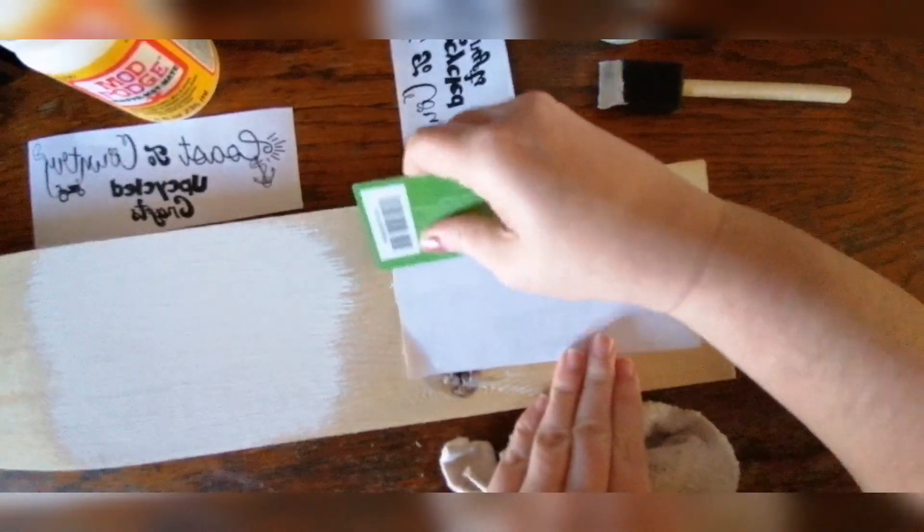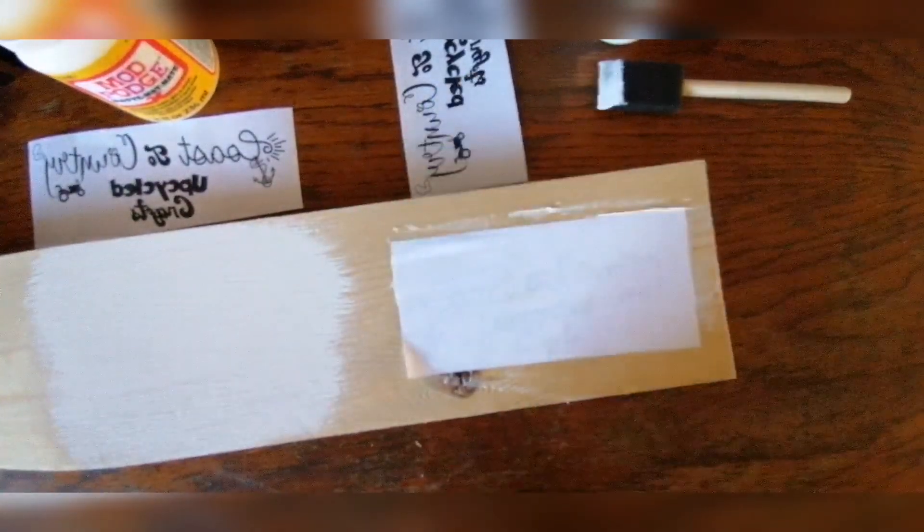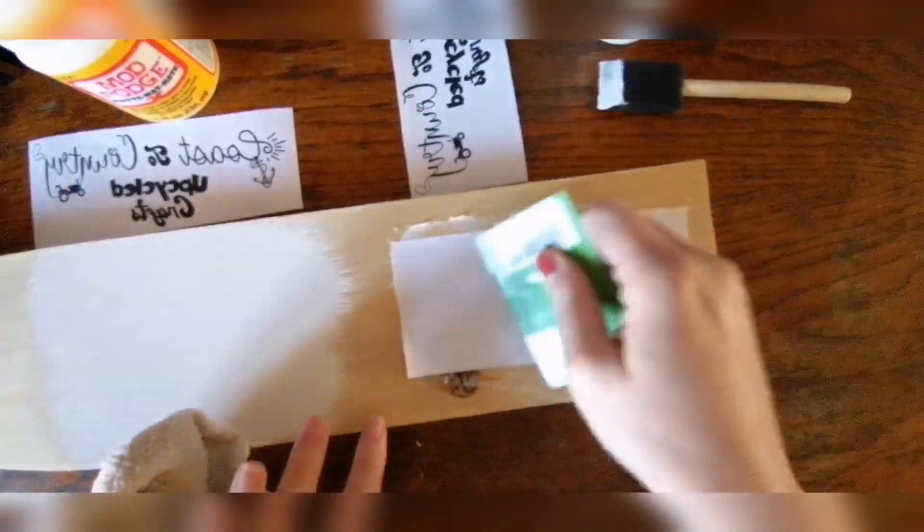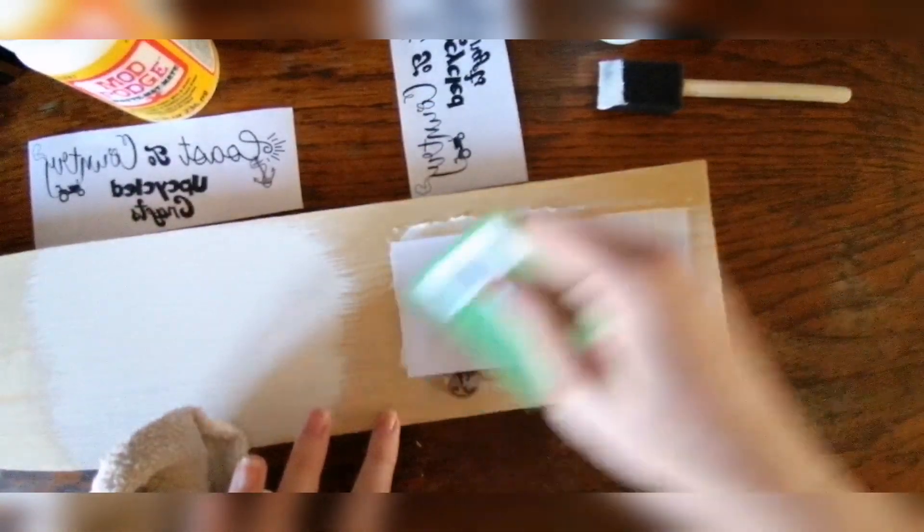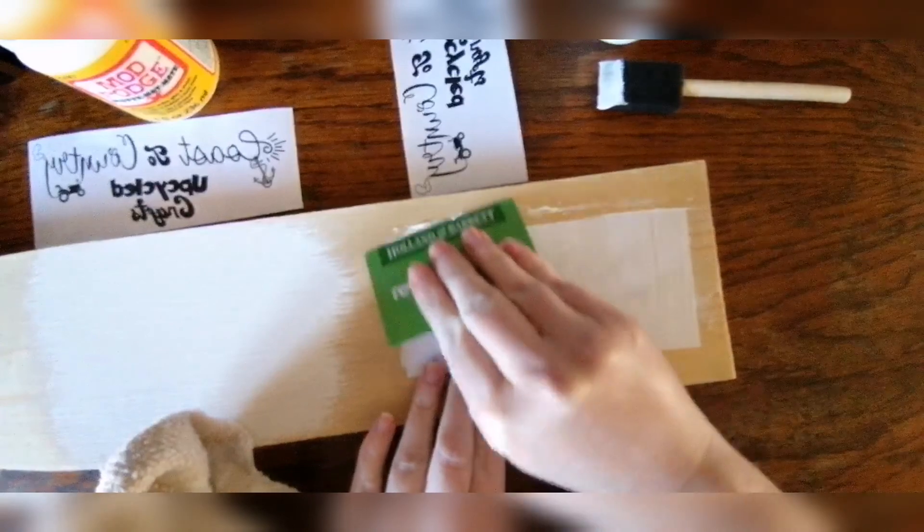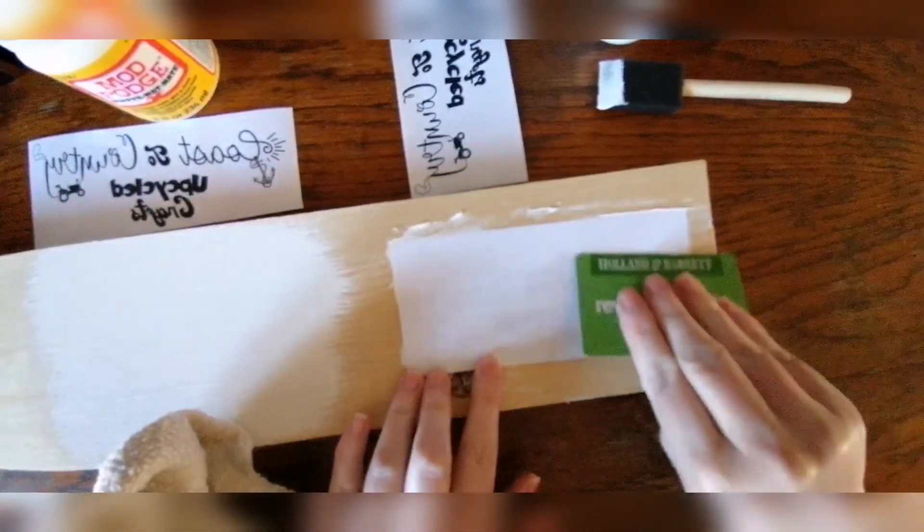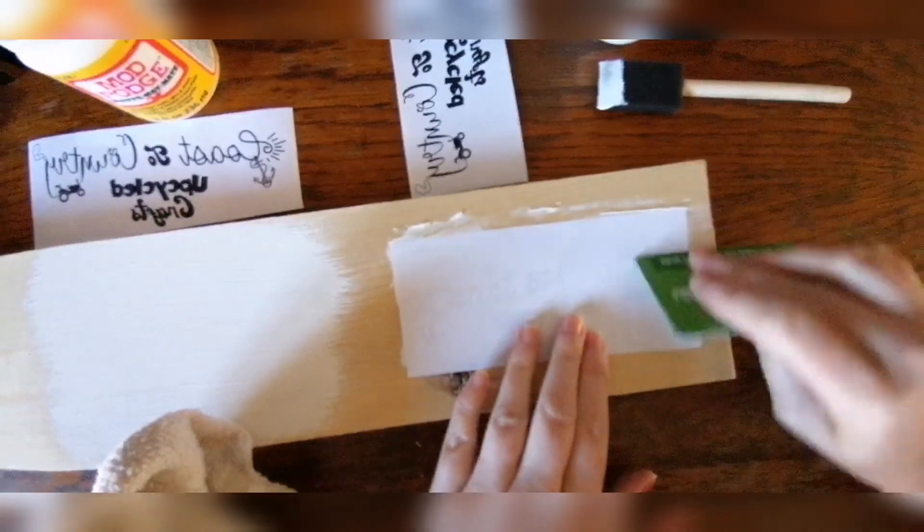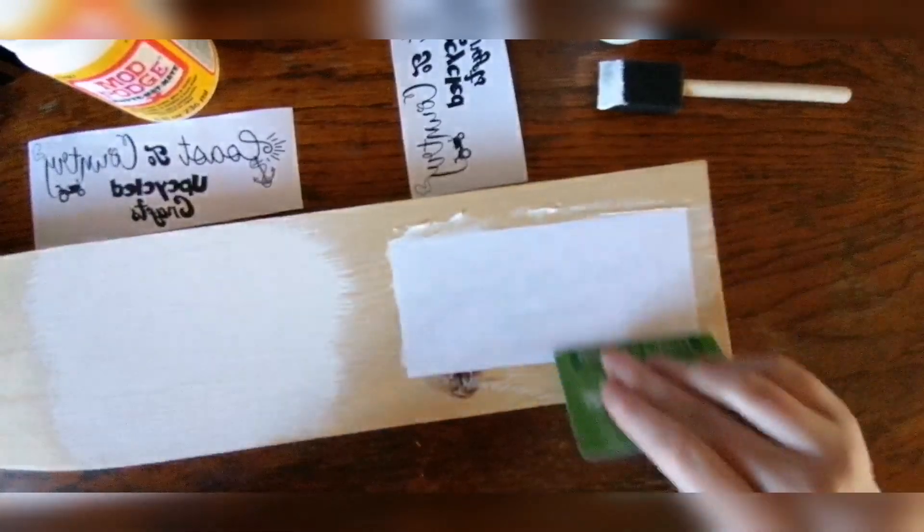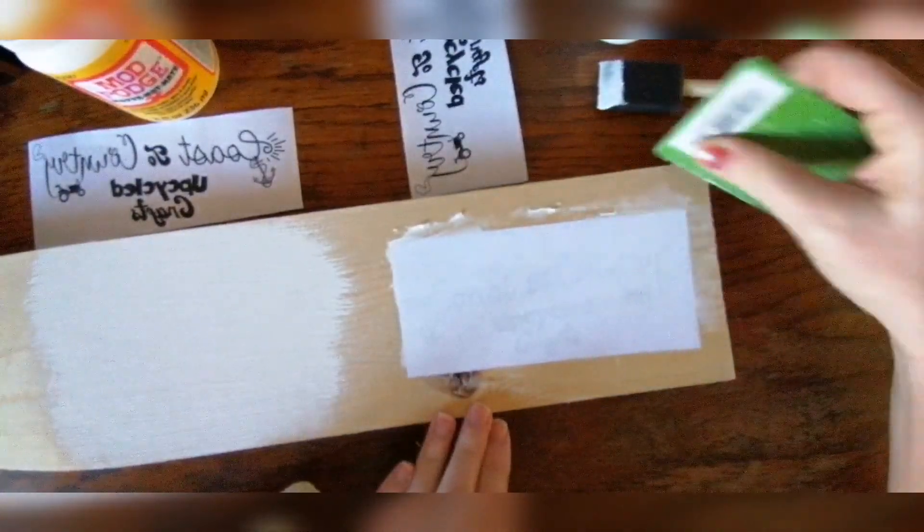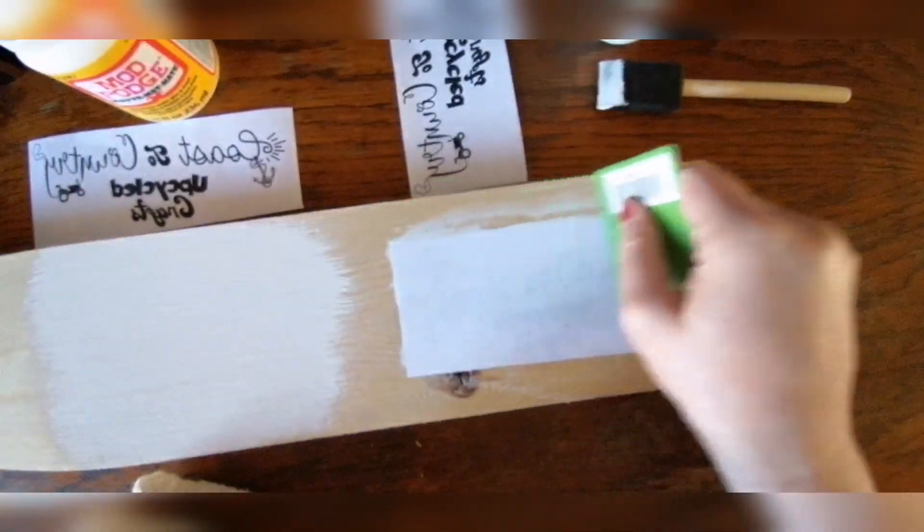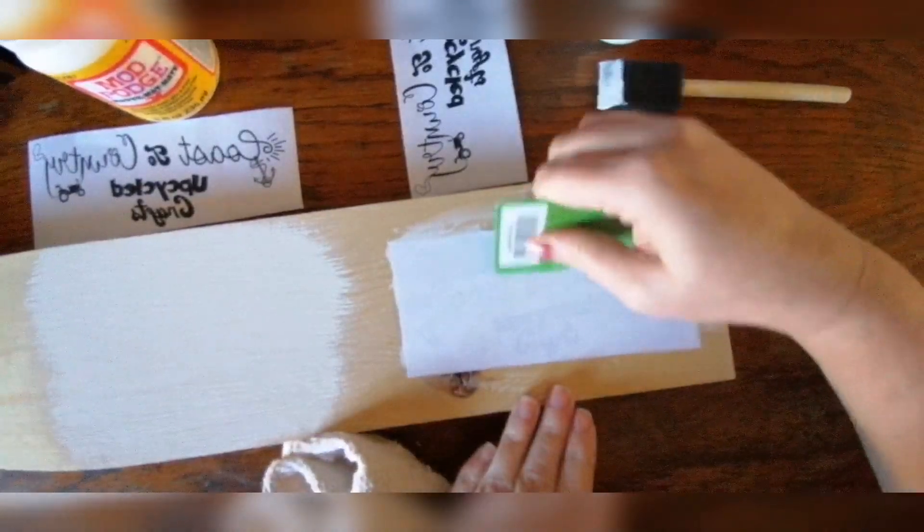Now you can either use a card to smooth out any air bubbles or you can use your fingers. Either way you can do whichever way you find is easiest for you. The key is to really smooth out and really ensure there are no creases, there are no air bubbles because if there are any creases or air bubbles between the glue, the paper and the wood then you aren't going to get that smooth finish and you could end up with patchy, patchy wording, patchy graphics, and it just won't transfer properly.